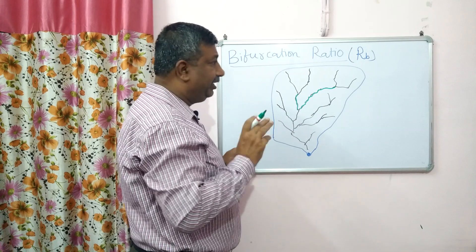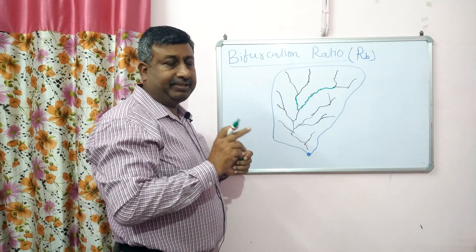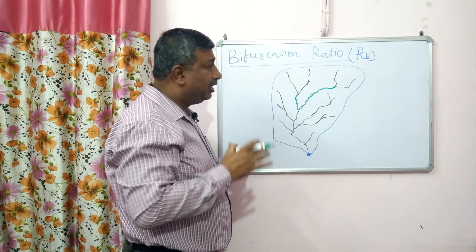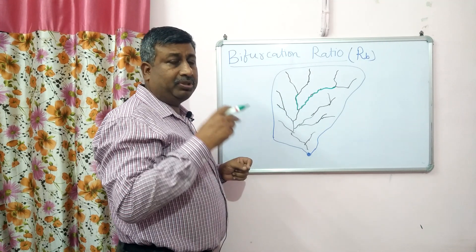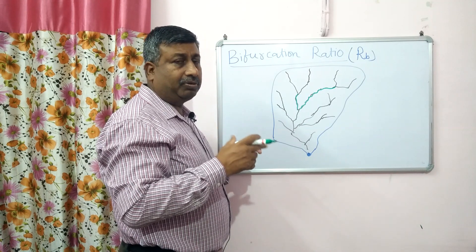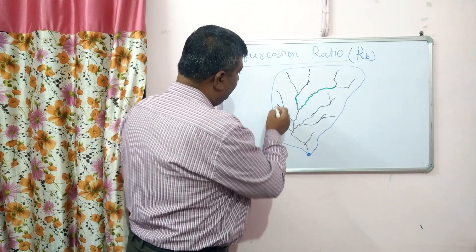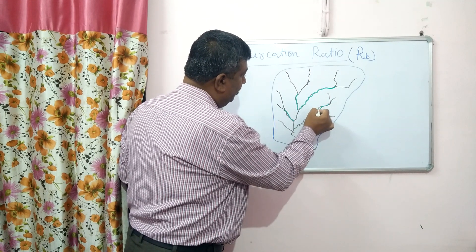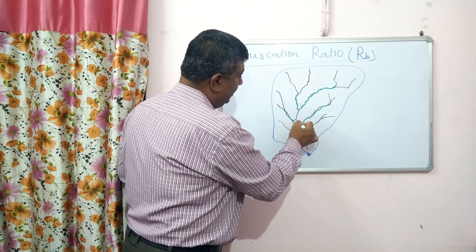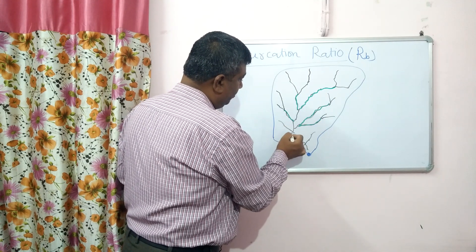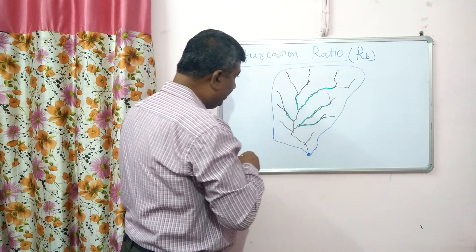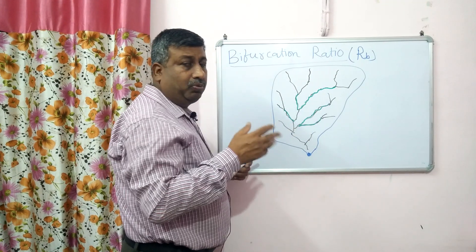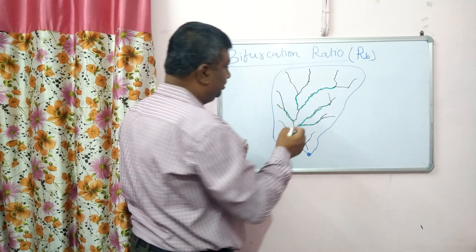Please watch the video on stream characteristics where I have explained about stream order. Stream order is very essential to know bifurcation ratio. Whenever two or more first order streams meet, they make a second order stream. The first order makes second order, and whenever two or more second order streams meet, they make a third order stream.